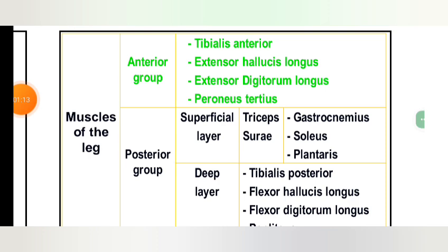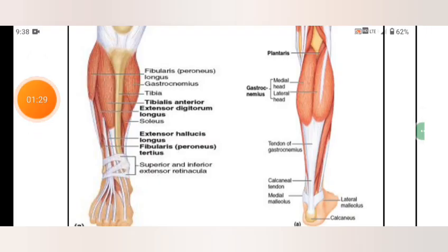The superficial layer consists of the triceps surae: gastrocnemius, soleus, and plantaris. The deep layer includes: tibialis posterior, flexor hallucis longus, and flexor digitorum longus. Now we can show the diagram and muscles.